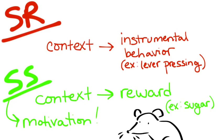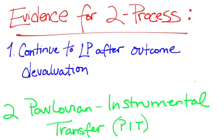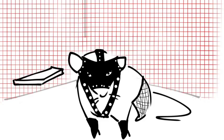These two associations operate independently of each other. Two-process theory is backed by a couple of intriguing phenomena, which include continued instrumental behavior after outcome devaluation and Pavlovian instrumental transfer.